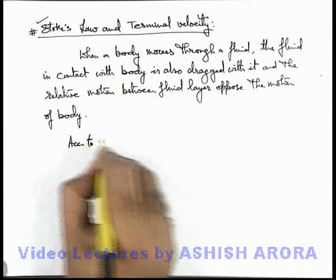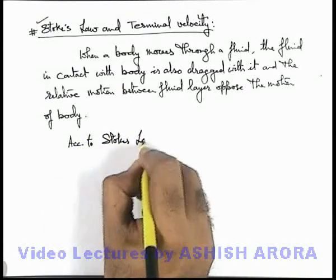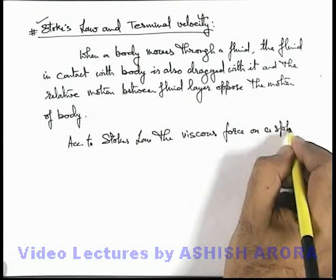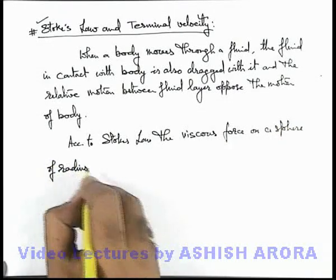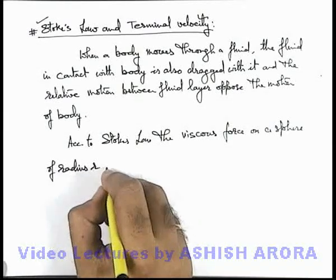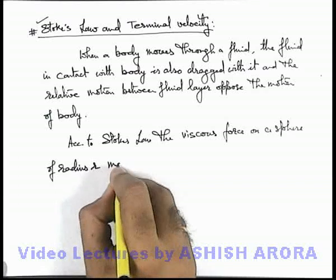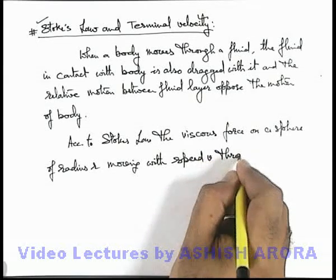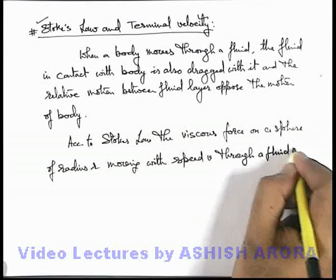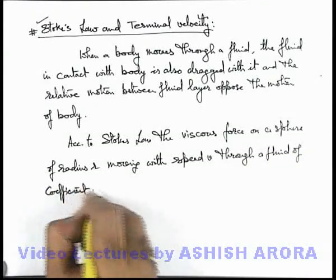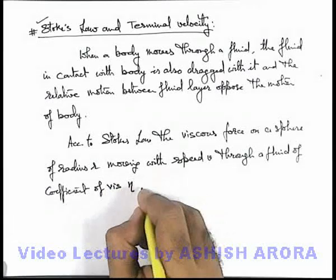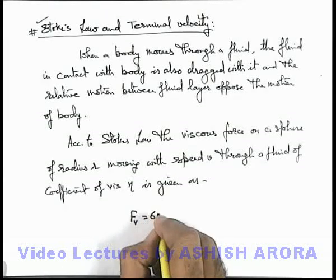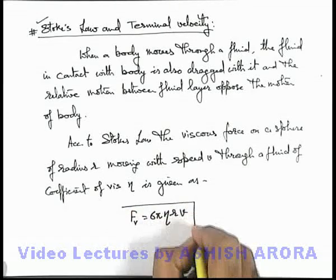According to Stokes' Law, the viscous force on a sphere of radius r moving at speed v through a fluid of coefficient of viscosity eta is given by this direct expression: the viscous force acting on the sphere is 6πηrv, where v is the speed of the sphere.